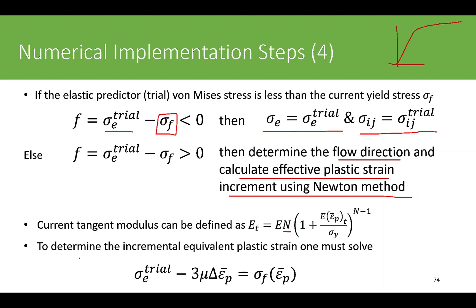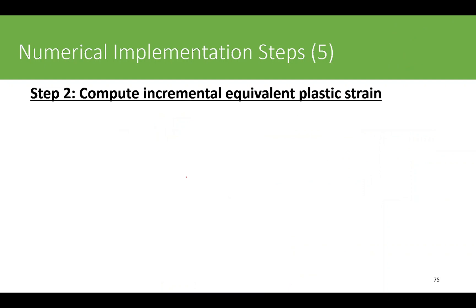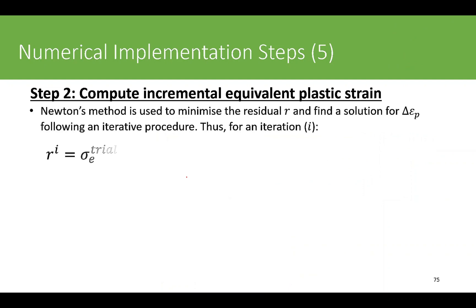We then use the incremental form to apply the plastic corrector step. The trial stress minus three times mu times the increment of equivalent plastic strain equals the flow stress — a function of equivalent plastic strain — rather than the constant yield stress from the previous case. We iteratively solve the residual to find the increment of equivalent plastic strain. Since sigma_f also depends on epsilon_p, it must be updated as the equivalent plastic strain increases due to hardening.